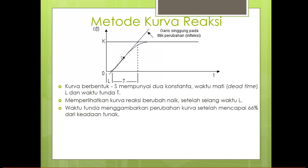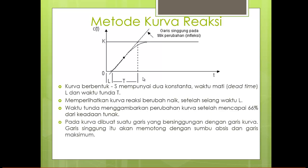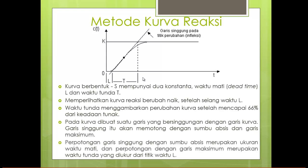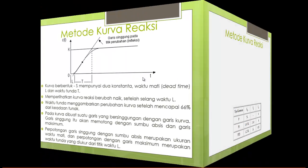Nilai L dicari dengan cara membuat sebuah garis singgung — antara waktu respon muncul sampai menyinggung garis dari respon itu sendiri, ditarik kepada nilai steady state. Nilai puncak pada garis tersebut dijadikan acuan sebagai nilai dari T. Waktu T ini menggambarkan perubahan kurva mencapai 66% dalam keadaan steady state.